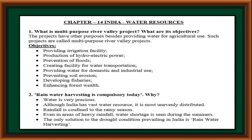What is a multipurpose river valley project? What are its objectives? Projects that have purposes besides providing water for agricultural use are called multipurpose river valley projects.